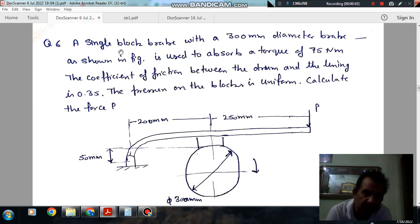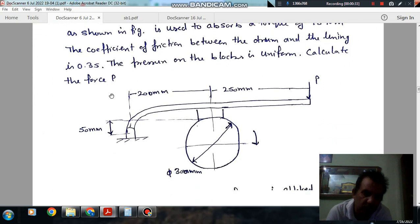Question number 6: A single block brake with 300 mm diameter, as shown in the figure, is used to absorb a torque of 75 Nm. The coefficient of friction between the drum and lining is 0.35. The pressure on the block is uniform. Calculate the force P.